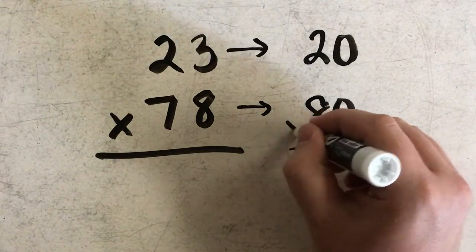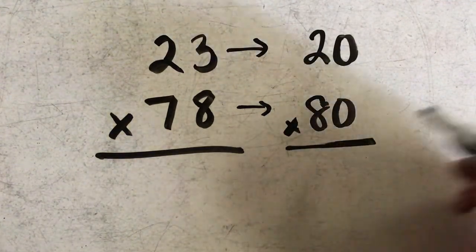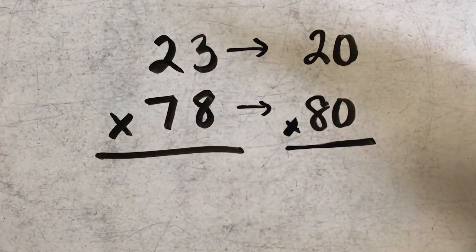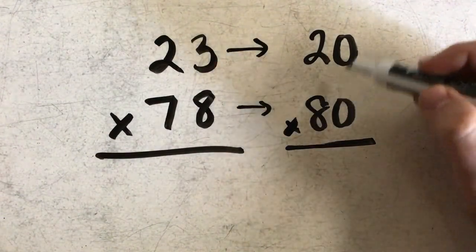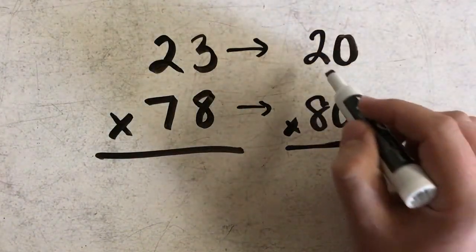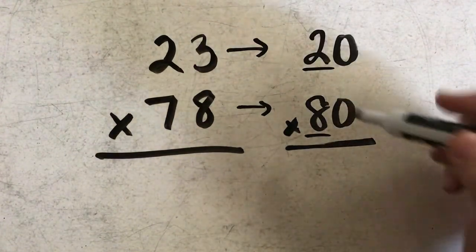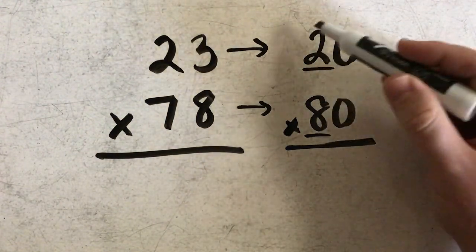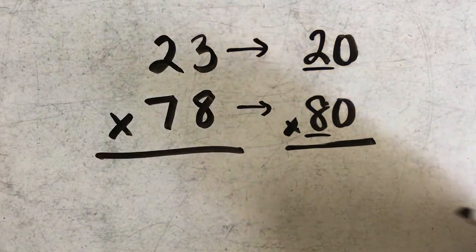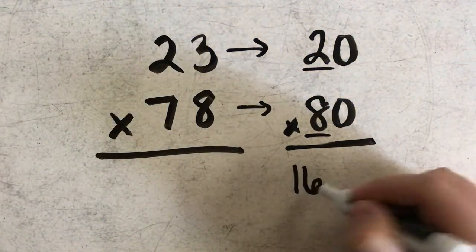And then I'm going to multiply these two rounded factors. This is a very easy multiplication. All I'm doing is simply choosing the two numbers that I have here, and I'm going to multiply 2 times 8, which gives me 16.